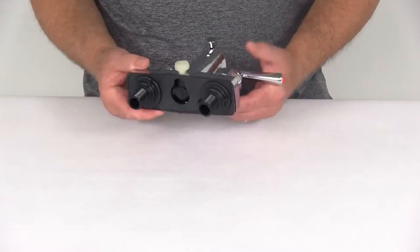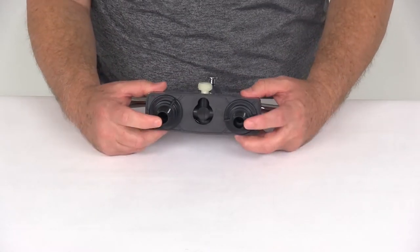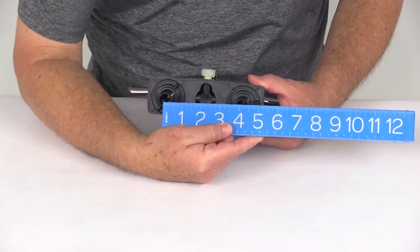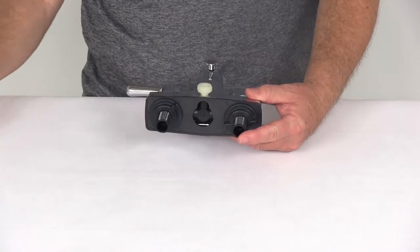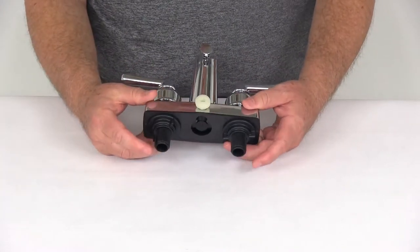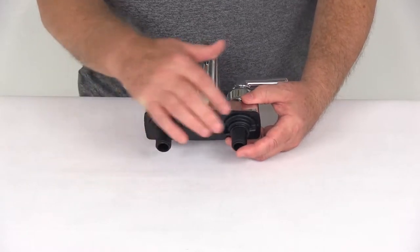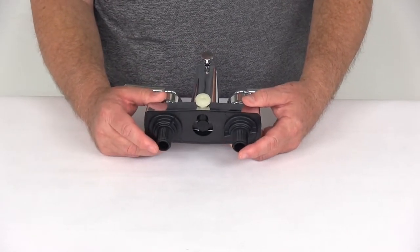I want to give you some dimensions on this faucet. The distance between the threaded water connectors right here on the back, center to center, measures four inches. When you go to install this, you'll want to drill two one inch holes for these connectors to stick through, spaced at four inches center to center.